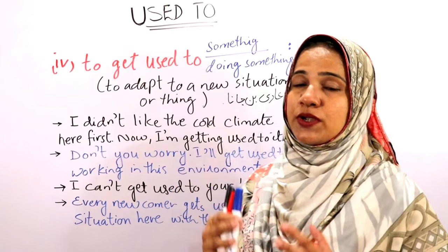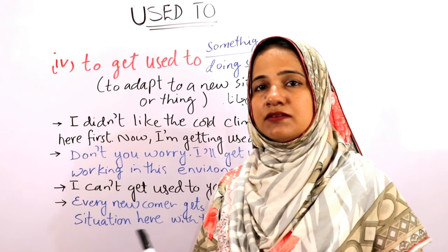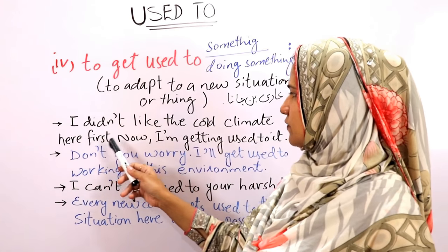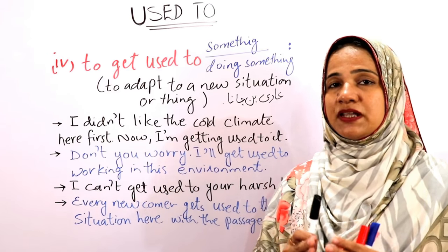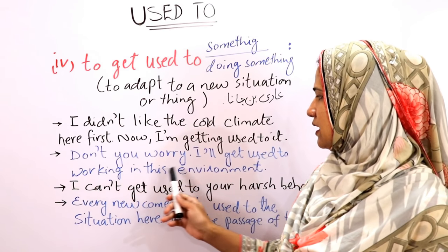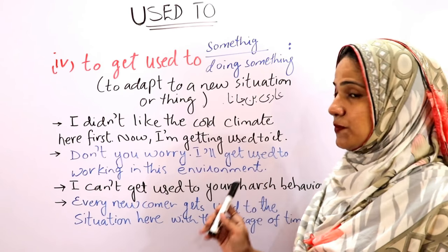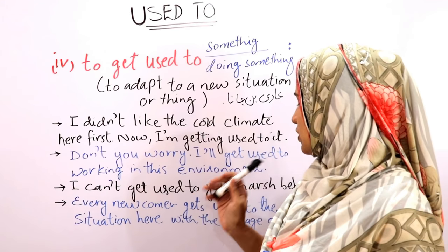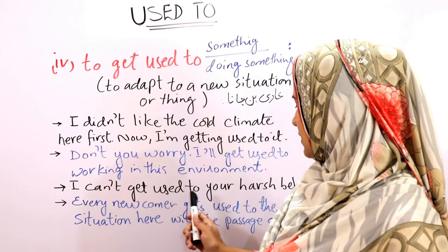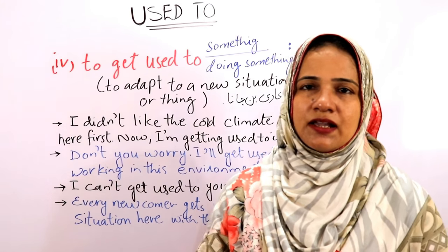Now we are going to discuss another expression: 'to get used to something' or 'to get used to doing something.' It means to adapt to a new situation or thing — to become accustomed to something. Examples: 'I didn't like the cold climate here at first, but now I am getting used to it.' 'Don't worry, I'll get used to working in this environment.' 'I can't get used to your harsh behavior — I want to quit my job.' 'Every newcomer gets used to the situation here with the passage of time.'